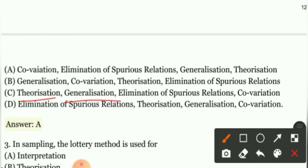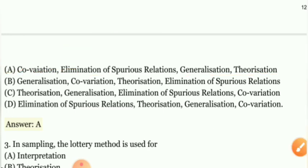Option C - theorization, generalization, elimination of spurious relations, co-variation. Option D - elimination of spurious relations, theorization, generalization, co-variation. So guys, if you remember, option A is the right answer, which means co-variation, elimination of spurious relations, generalization, and theorization. So option A is your right answer.